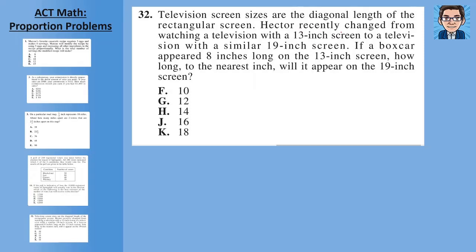And for the last problem, Hector had a 13 inch screen and he moved to a 19 inch screen. If a boxcar appeared eight inches on the 13 inch screen, how much would it appear on the 19 inch screen? And again, just set up a proportion. So we set up the screen, the actual size to what it appeared. We would set up the ratio of on a 13 inch screen, it appeared to be eight.